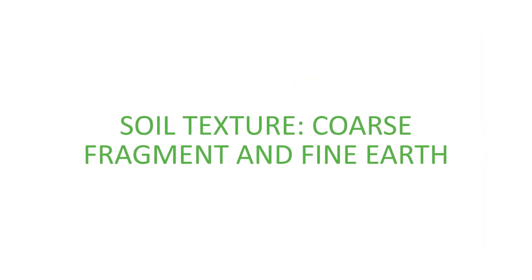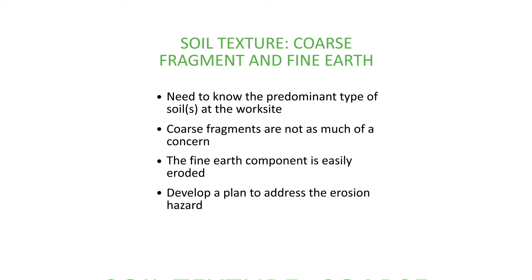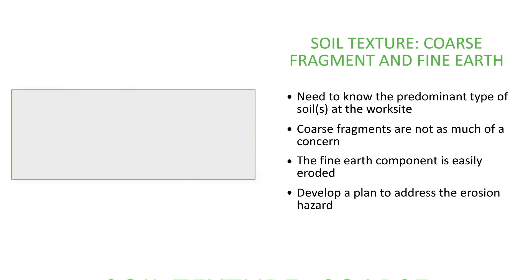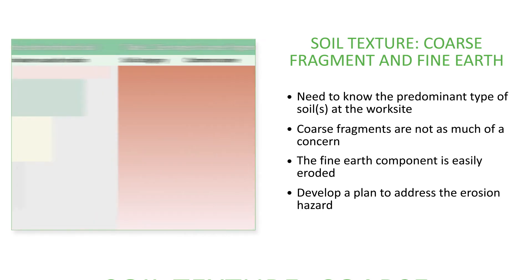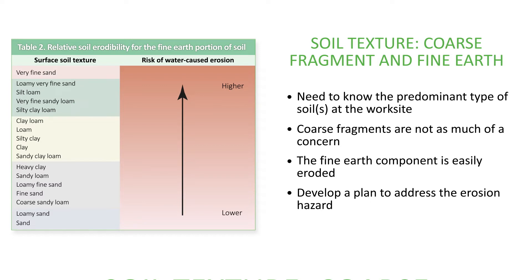Soil texture — coarse fragment and fine earth. Identifying the soil texture at your work site and knowing its erodibility risks will allow you to prepare an appropriate erosion control plan. Table 1 gives practical examples of soil particle sizes for coarse fragments and fine earth. Typically, very few erosion control issues occur with boulders and cobble-size material. The fine earth particles pose an erosion hazard and require attention. Table 2 expands the fine earth component and shows the increased risk of erosion by soil texture. The two smallest grain particles in the fine earth category, silts and clays, require a field test to distinguish between them.